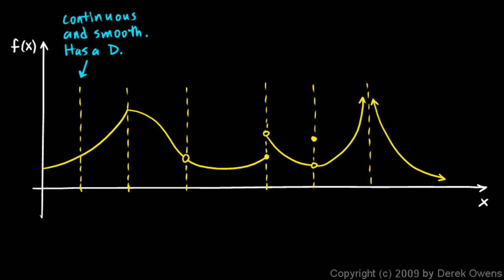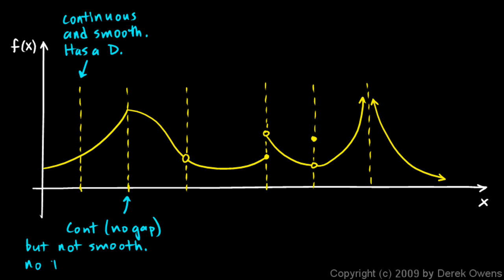At this next point, the function is continuous — there's no gap there — but it's not smooth. There's a cusp there, so there's no derivative at that point. You could talk about a slope just to the left and just to the right of that point — it would make sense to talk about left and right derivatives — but not the derivative.